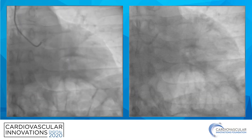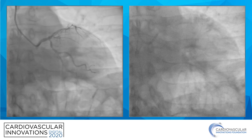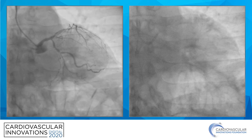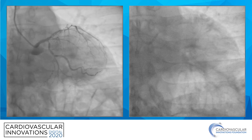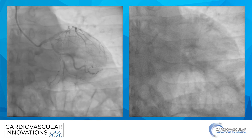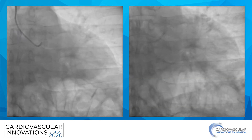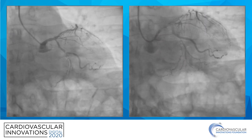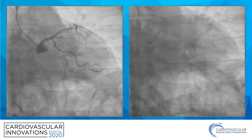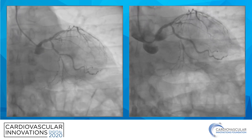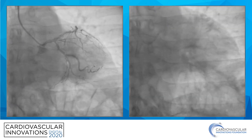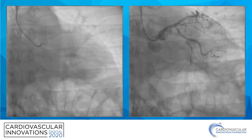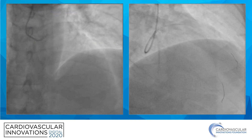Here is a case of a patient with disease in the AV groove circumflex extending into an obtuse marginal branch. We were able to stent from the main branch into the obtuse marginal branch, jailing the distal portion of the circumflex without the need for a second stent.